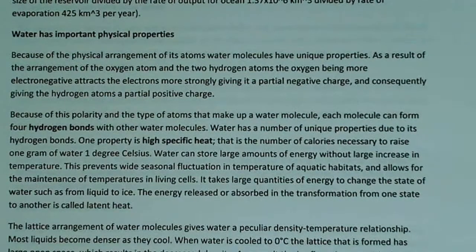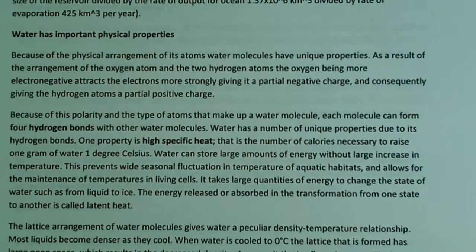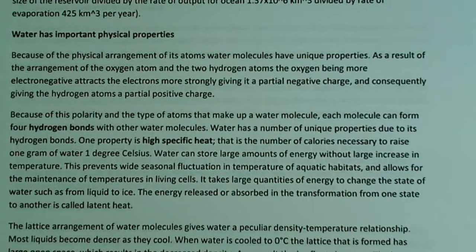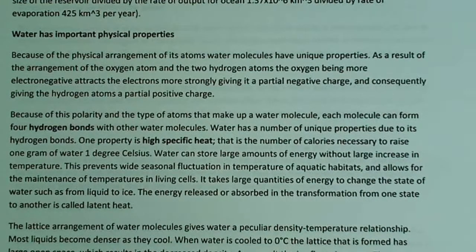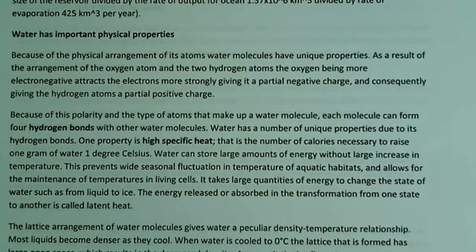Water has many important physical properties discussed across chemistry and biology. The physical arrangement of the oxygen and two hydrogen atoms gives water a permanent dipole: oxygen is more electronegative than hydrogen, so there's more electron density around the oxygen, giving it a partial negative charge and giving hydrogen a partial positive charge. Because of this polarity, each water molecule can form up to four hydrogen bonds, which is quite unique.